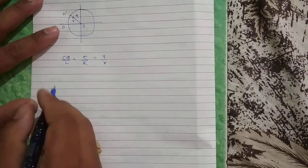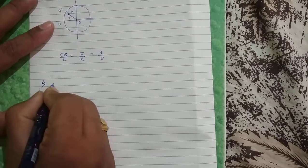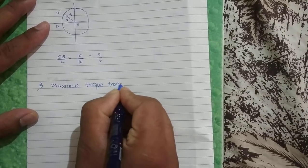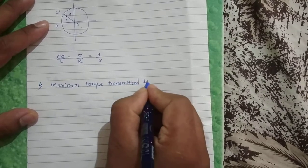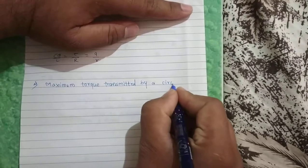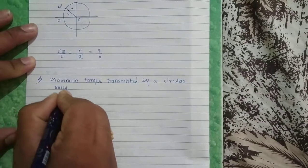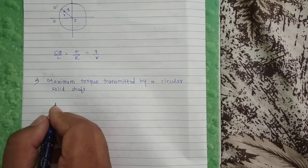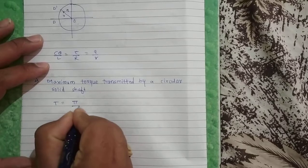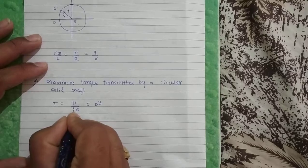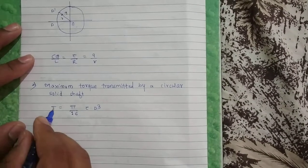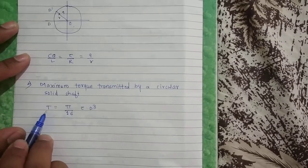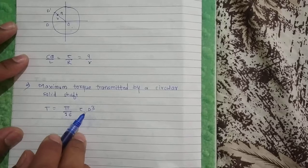Now we are going to see the next topic: maximum torque transmitted by a circular solid shaft. The formula is directly given as: maximum torque T = pi/16 × tau × d³. So the maximum torque transmitted by a circular solid shaft is T = (π/16) · τ · d³.